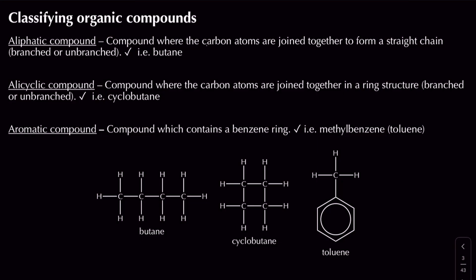An aliphatic compound is one where the carbon atoms are arranged to form a straight chain structure, which can be either branched or unbranched. An alicyclic compound is where the carbon atoms are arranged in a ring structure — not a chain — and again this can be branched or unbranched. For example, butane has four carbon atoms arranged in a straight chain — that's aliphatic. Cyclobutane also has four carbon atoms, but they're arranged in a ring, making it alicyclic.